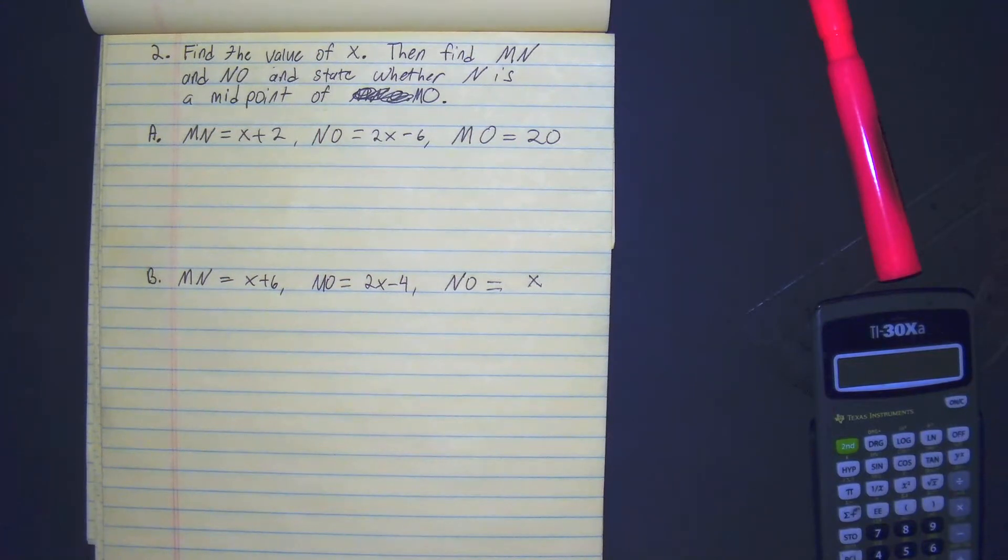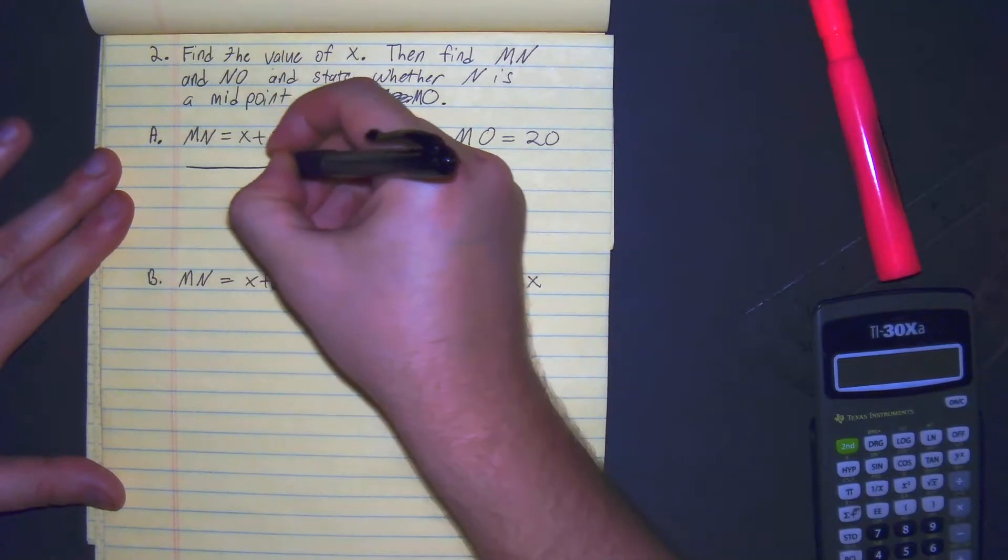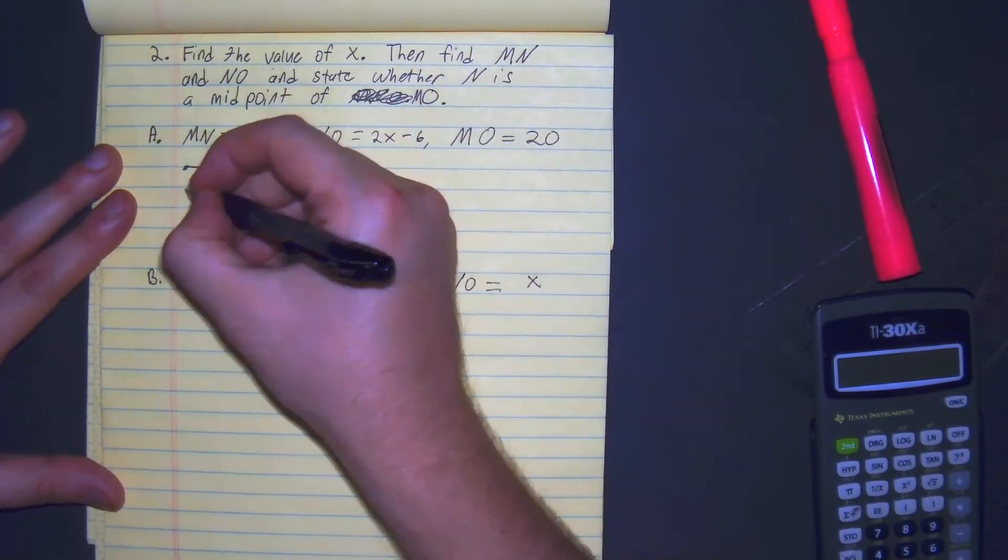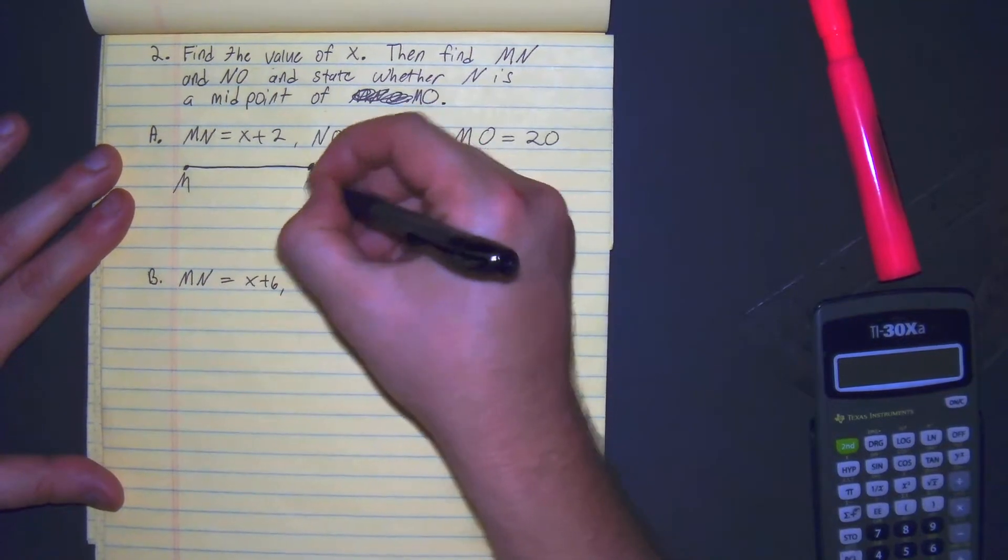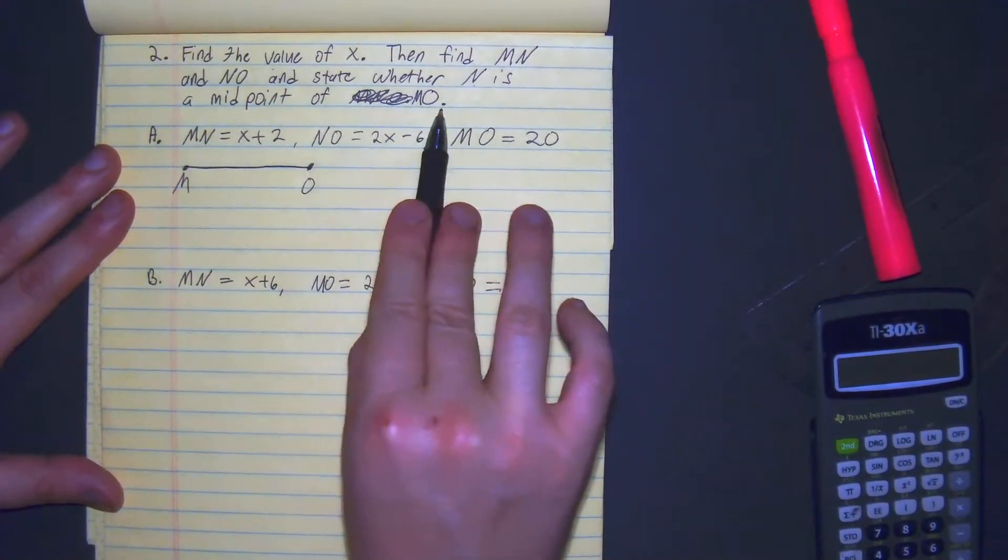Oh my gosh, that's a lot. So what we're going to do is let's draw out what they give us. MO is the entire length. How do I know that? N is a midpoint of MO.